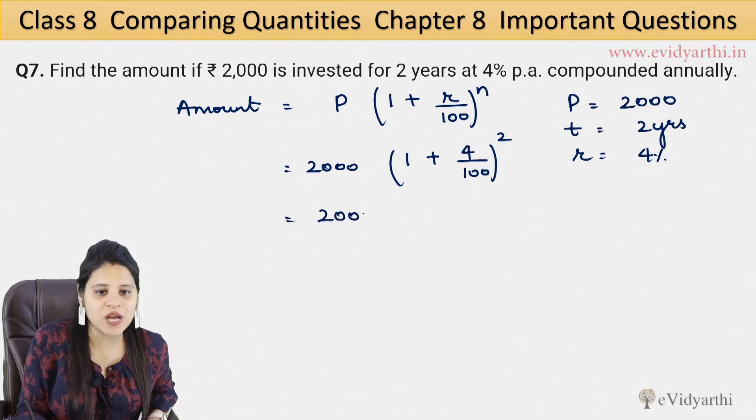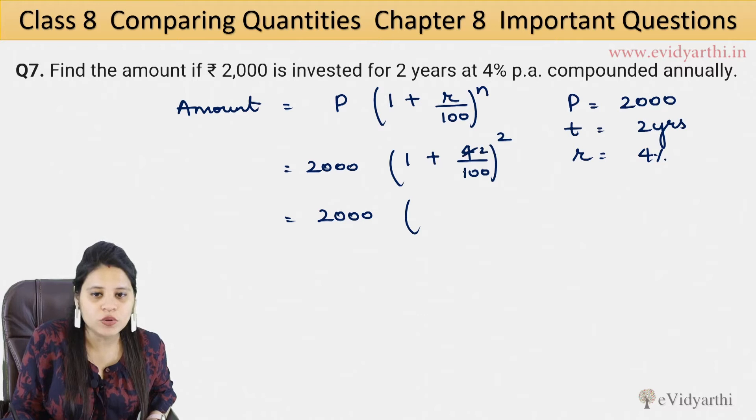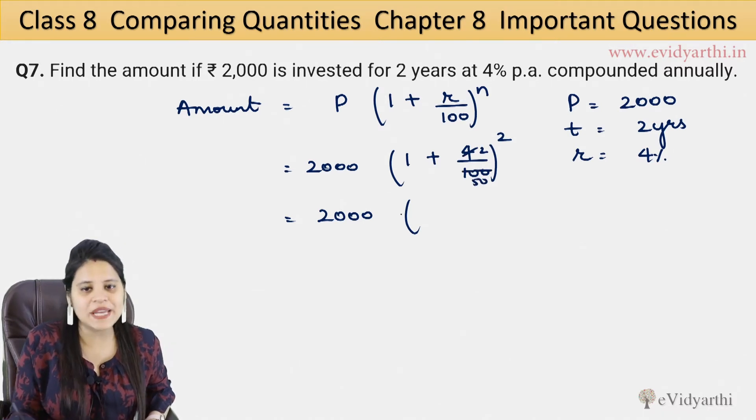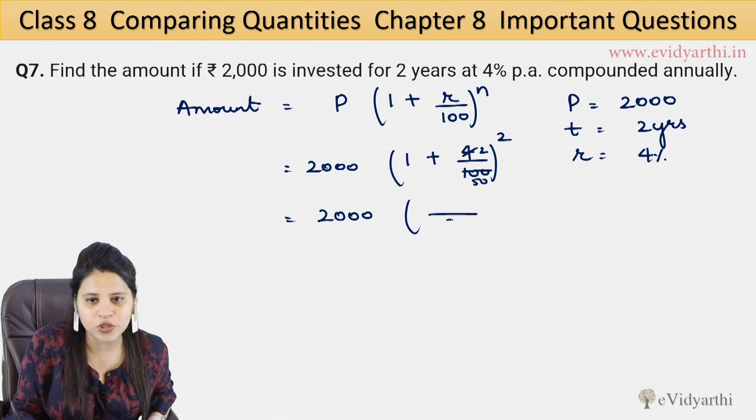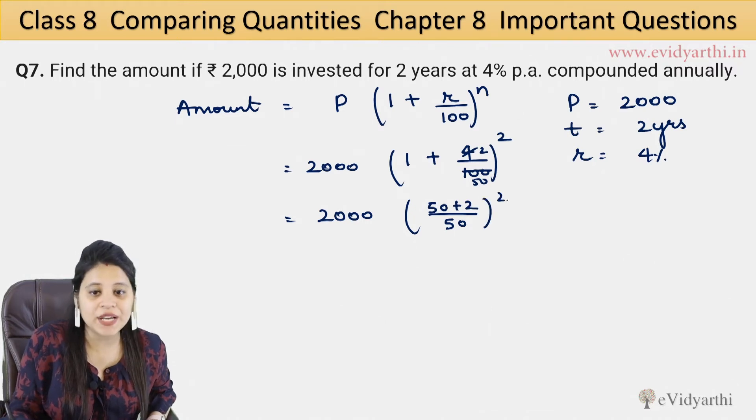So this will be 2000 as it is. If we want to cut this, so this will be 2 upon 50. And this will be 50 plus 2, and this will be square. So this will be 2000 into 52 upon 50, and this will be square.